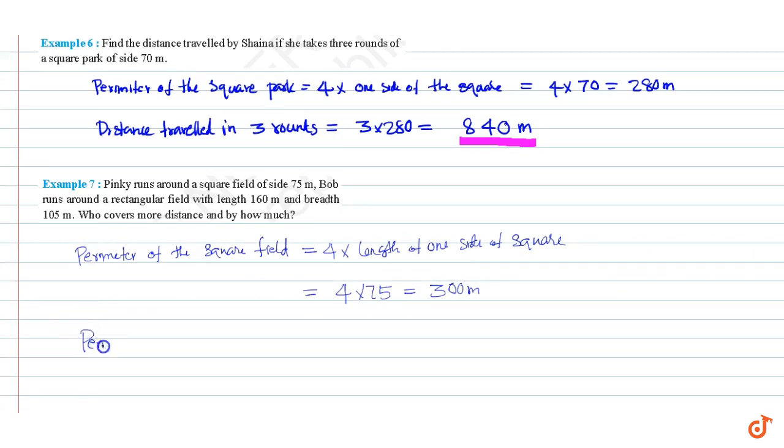Perimeter of the rectangular field equals 2 times (length plus breadth), which equals 2 times